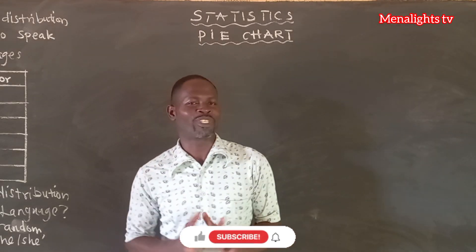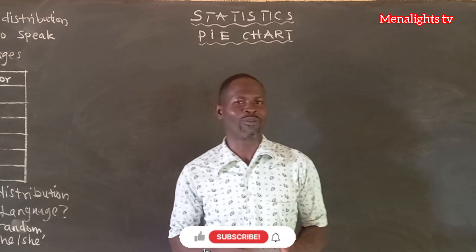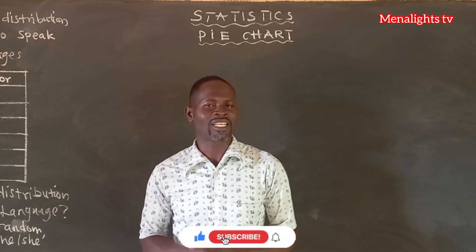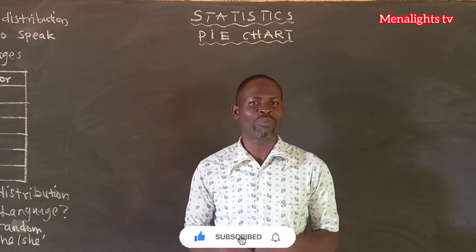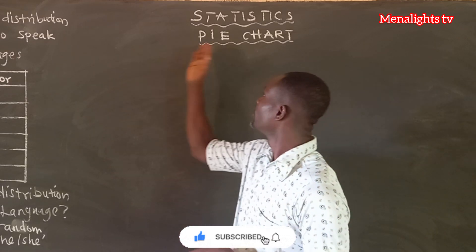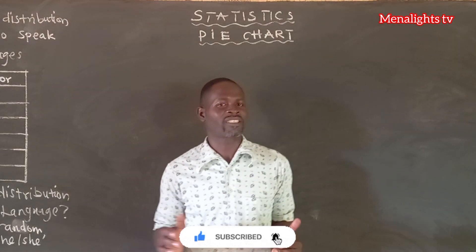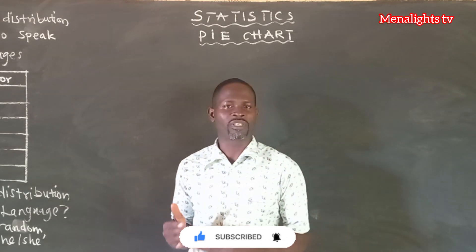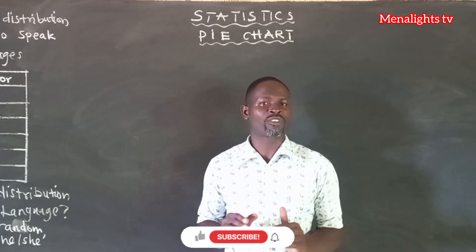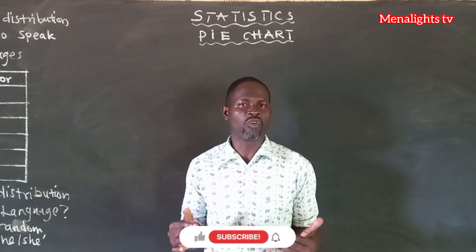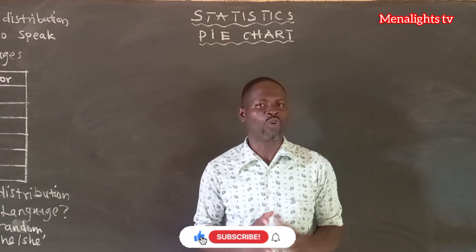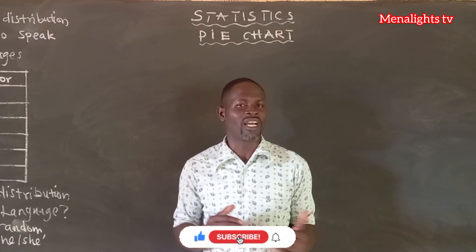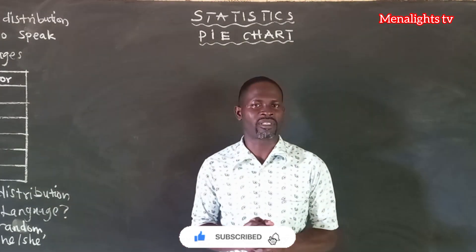Hello my lovely fans, it is another beautiful day as I welcome you to Medallist TV. As we have started with handling data, today our topic is pie chart. A pie chart is a circular diagram which is divided into sectors to represent parts or proportions of a whole. Now we look at a question and see how best we can go about it.